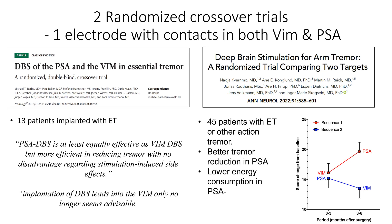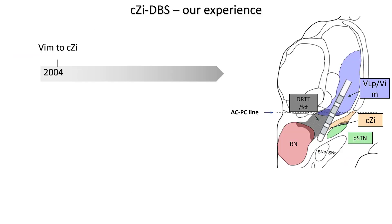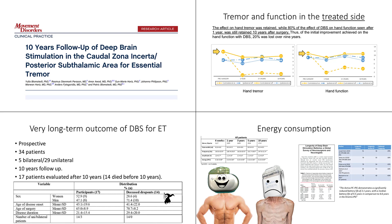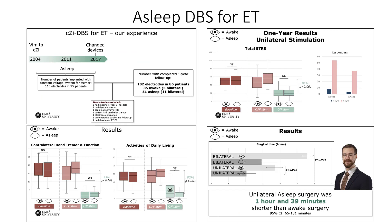An important question is of course whether we should combine these targets. We now have two randomized trials with one electrode for both these targets, demonstrating a better effect in the zona inserta. I started using this target in 2004, and we have demonstrated its efficiency in a number of studies. We have recently presented a 10-year outcome demonstrating a very stable effect and also a low and non-increasing energy consumption. A major advantage is that visualization of the PSA on MRI makes sleep surgery for essential tremor possible. We have analyzed 86 patients and found that sleep surgery is not inferior to awake surgery regarding outcome, while it is much faster and presumably much more convenient for both the patient and the surgeon. Thus, I believe it would be beneficial for many now using VIM-DBS to combine this target with the PSA.